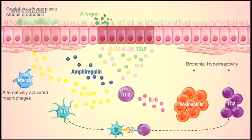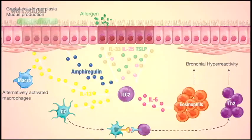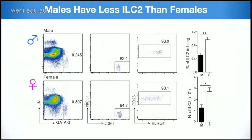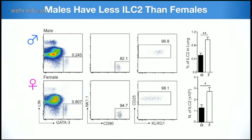IL-13 acts on macrophages to promote M2 polarization, directly on epithelium to promote mucus production and goblet cell hyperplasia, and on dendritic cells to promote type 2 immune responses. IL-5 allows recruitment of eosinophils from the blood circulation. ILC2 also promote tissue repair through secretion of amphiregulin. We wondered if ILC2 were different between males and females. Analyzing ILC2 in the lung — identified by high GATA3 expression and lack of lineage markers — both frequency and absolute number were dramatically reduced in males.